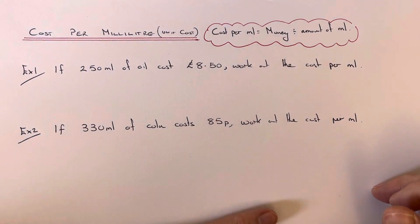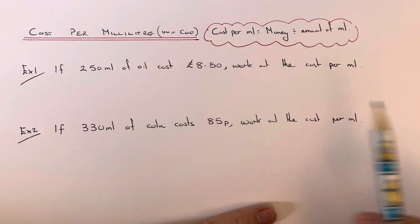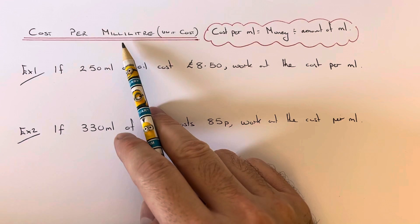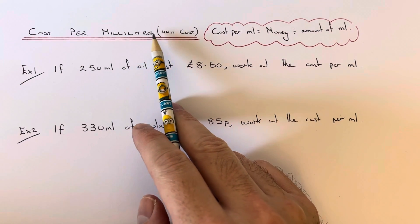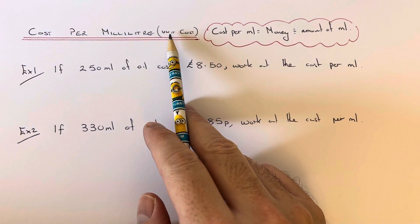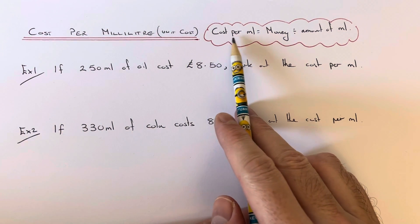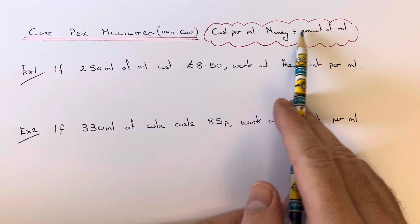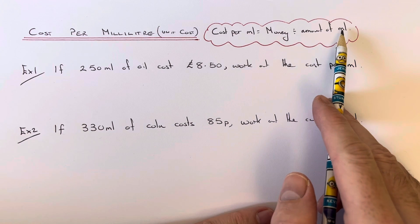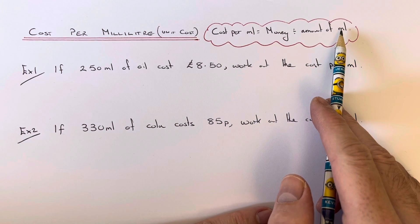Hi guys, welcome back. This is Maths 3000. Today I'm going to show you how to work out the cost per milliliter, which is the same as the unit cost per milliliter. To work this out, all you need to do is get your money and divide it by the amount of milliliters that you are buying.